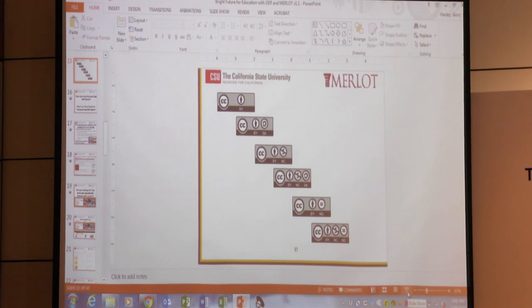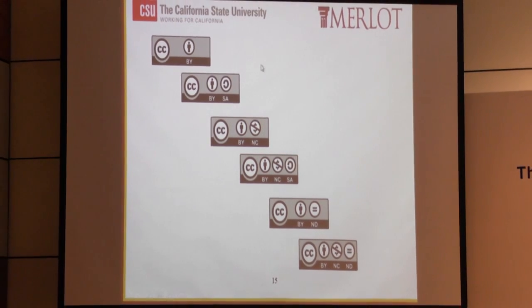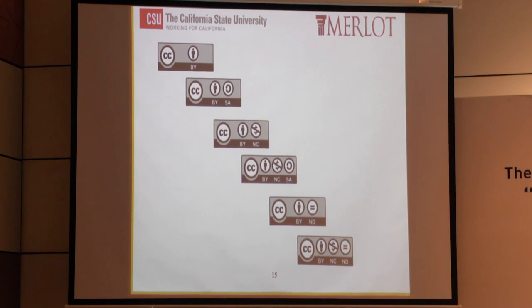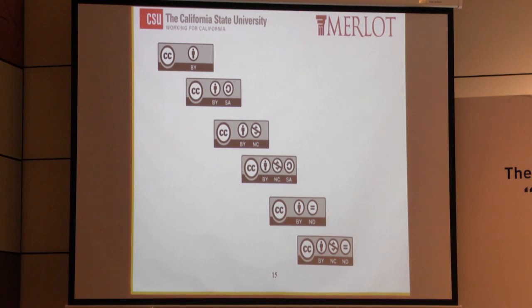Here's a little explanation about Creative Commons. These are the various types of licenses you can give open education resources. Everything is CC — Creative Commons. The first one says 'by,' which means when you use other people's material, you have to attribute it to the original author. So you say 'I'm using this material that was created by this person.' We do that in academia all the time — we reference other people's material.